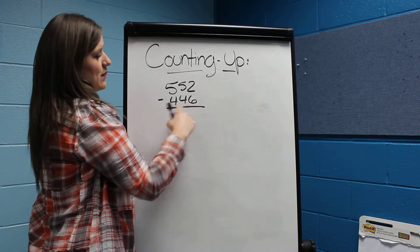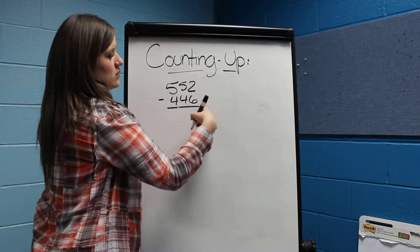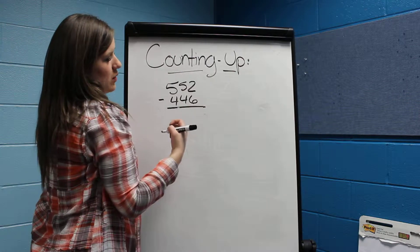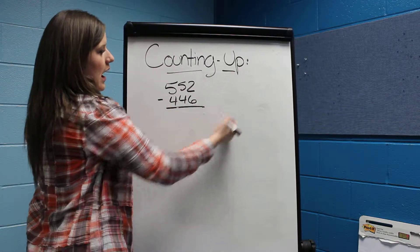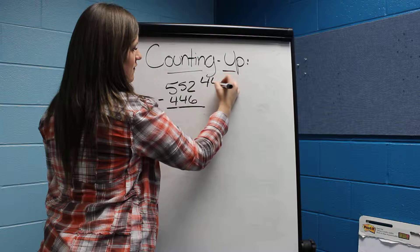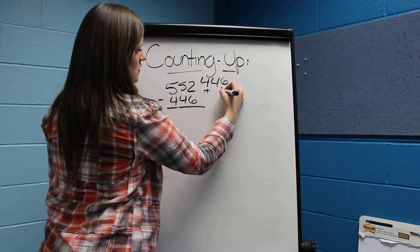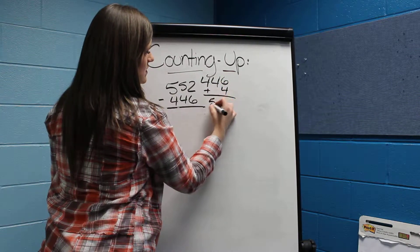So I want to make this bottom number and the last place value end with 0. So I'm going to add 446 plus 4, which is going to give us 500.